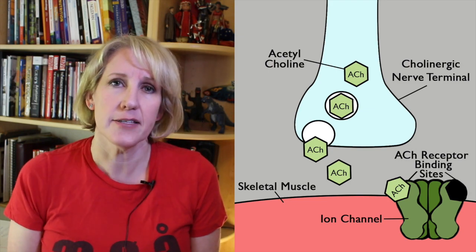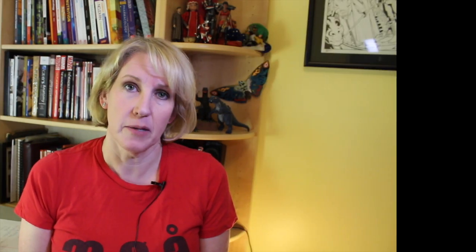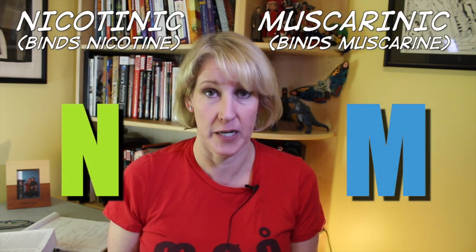There are receptors that bind acetylcholine all over the body. We would never even have known that there were different kinds of acetylcholine receptors throughout your body, except when people started trying out different drugs. Acetylcholine receptors come in two main flavors, which are nicotinic and muscarinic.